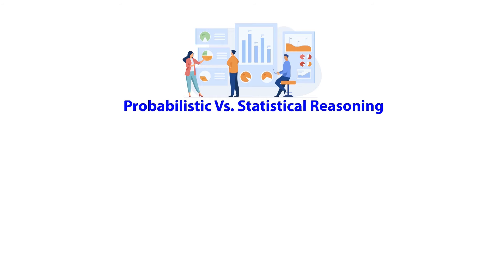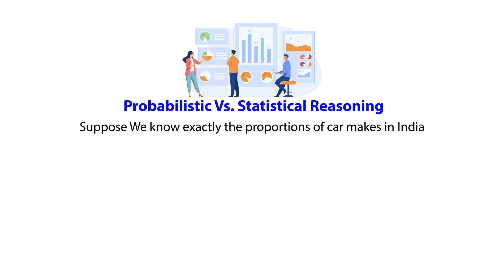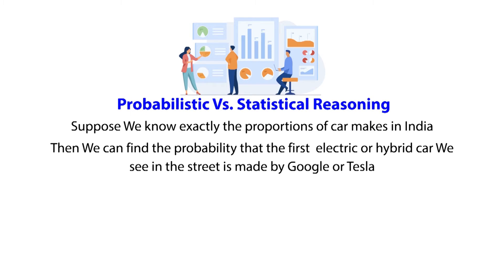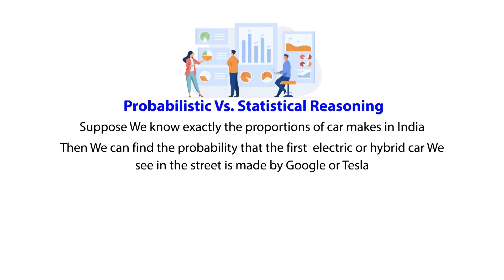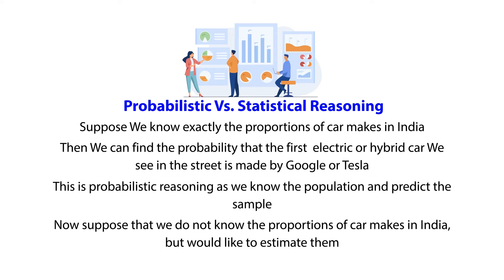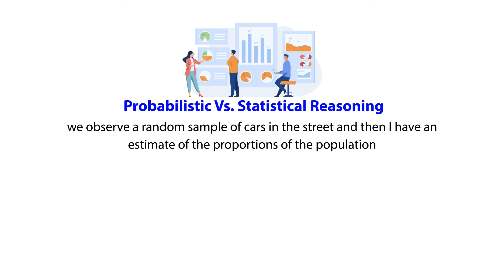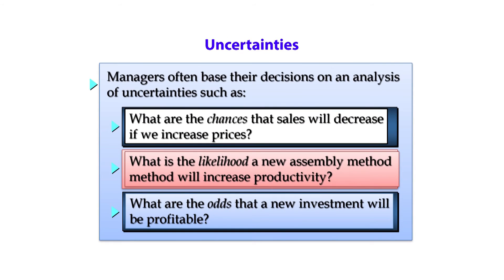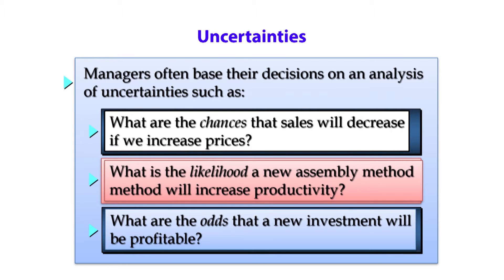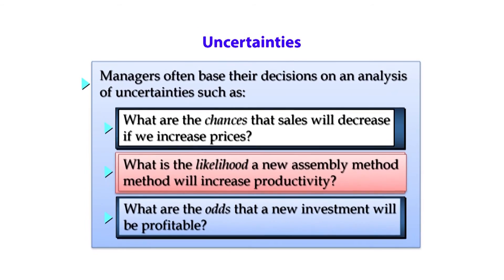Comparing probability with statistical reasoning: if we know exactly the proportions of car makes in India, we can find the probability that the first electric or hybrid car we see on the street is made by Google or Tesla — this is probabilistic reasoning, as we know the population and predict the sample. Now suppose we do not know the proportion of car makes in India but would like to estimate them — we observe a random sample of cars on the street and estimate the proportions of the population. This is called statistical reasoning. Managers often base their decisions on analysis of uncertainties, such as the chances that sales will decrease if prices are increased, the likelihood a new assembly method will increase productivity, or the odds that a new investment will be profitable.